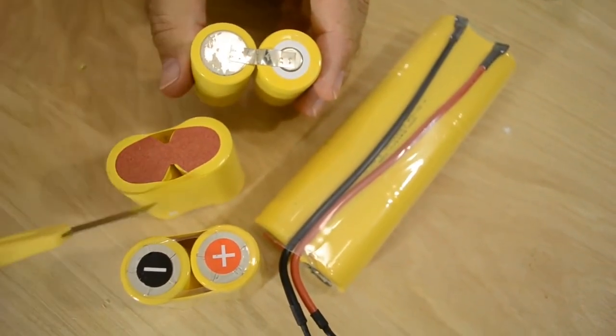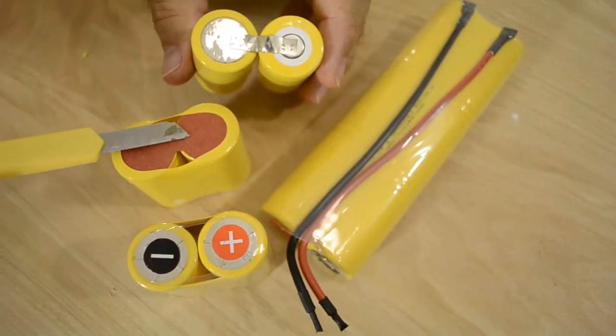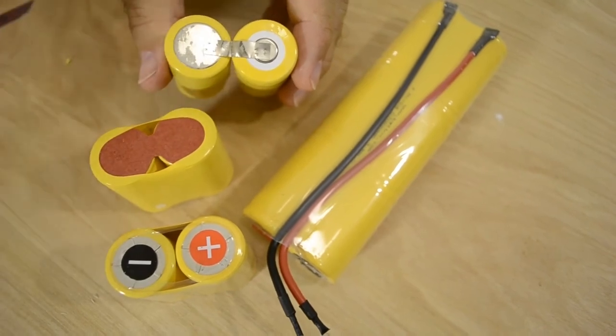To use, remove the shrink wrap and the insulation at the bottom and it should look something like this.